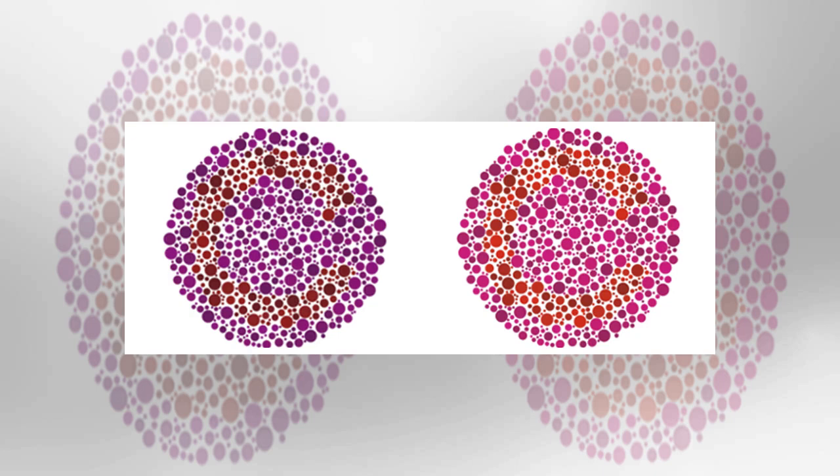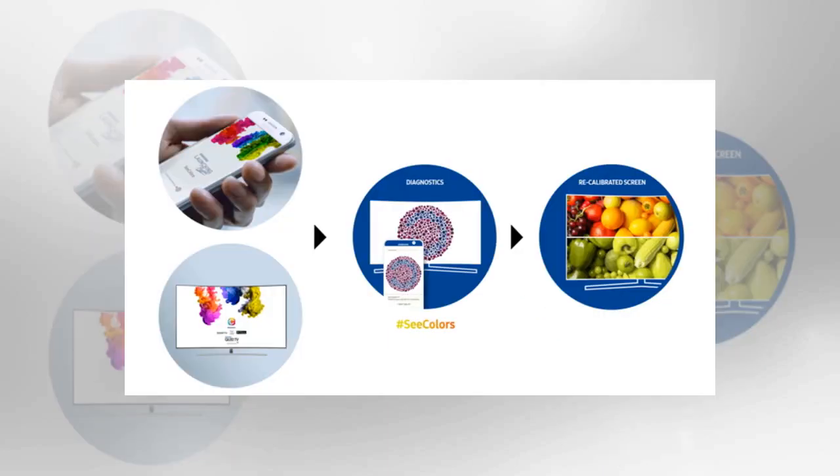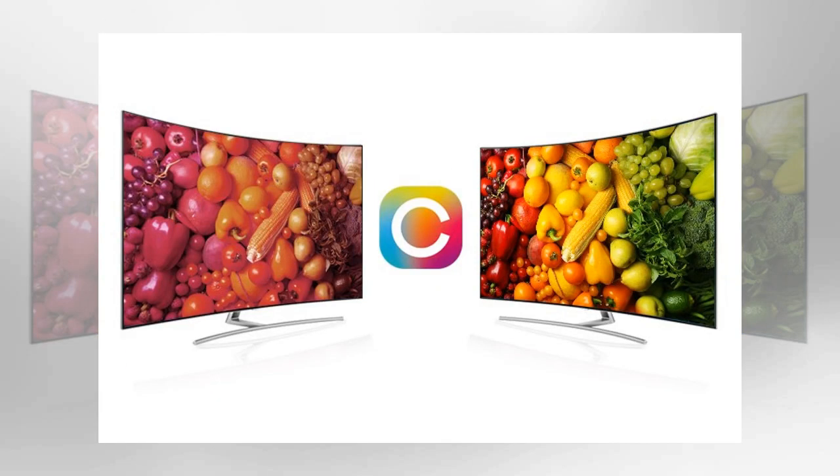It uses color filters and mathematical modeling to approximate a person's particular CVD situation. The mobile app then relays this information to a connected Samsung QLED Smart TV with See Colors also installed in order to automatically calibrate the TV to compensate for the colors that the CVD person is unable to distinguish.